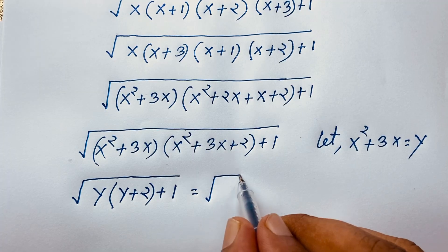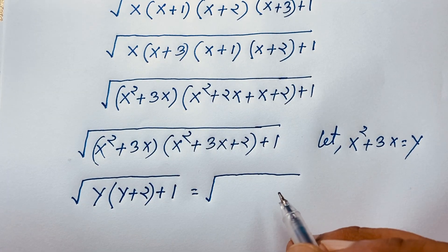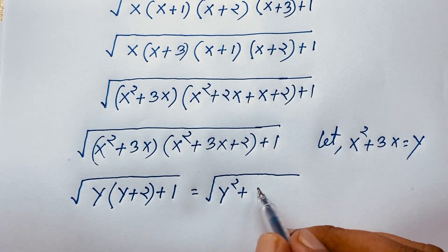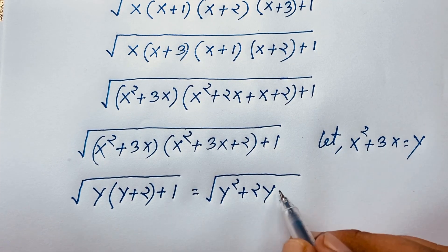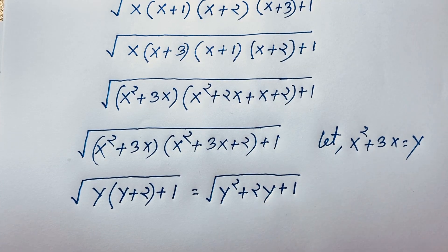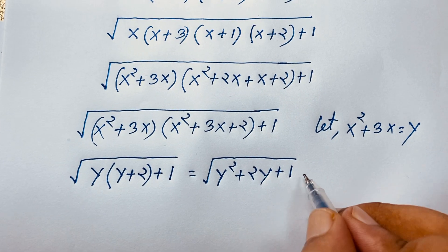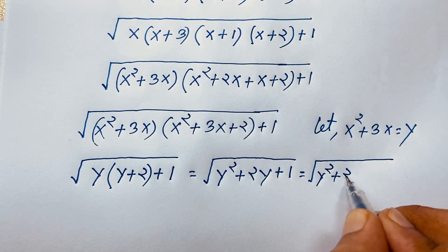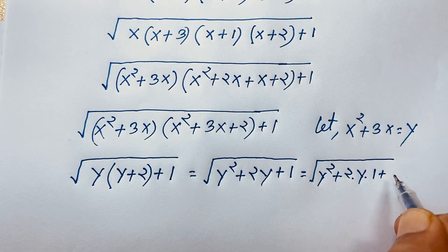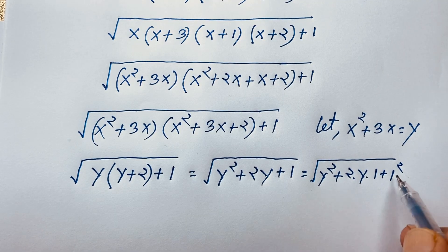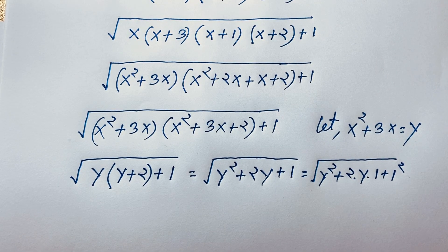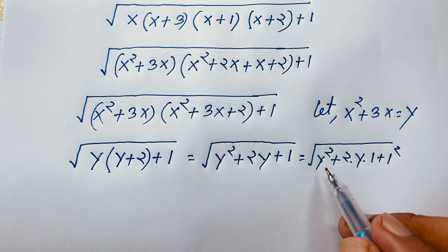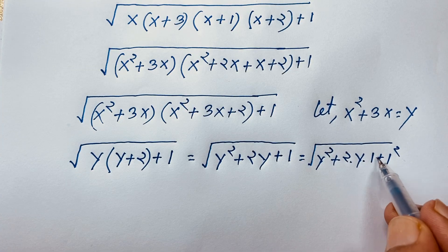Expanding y times (y+2) plus 1 gives us y squared plus 2y plus 1. Notice that y squared plus 2 times y times 1 plus 1 squared matches the formula for (a+b) squared, which equals a squared plus 2ab plus b squared.